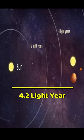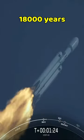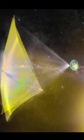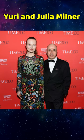Proxima Centauri is 4.2 light years away from us, and a modern spacecraft would take around 18,000 years to get there. This $100 million initiative is privately funded by billionaires Yuri and Julia Milner.